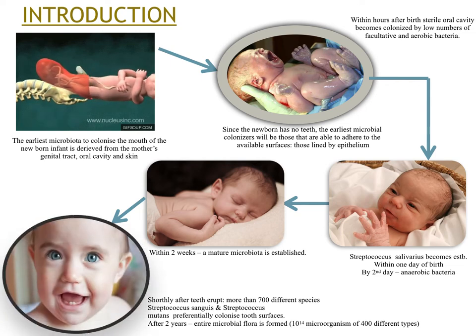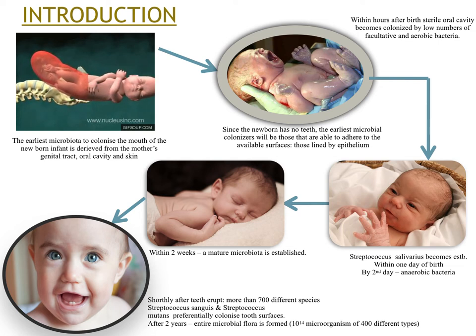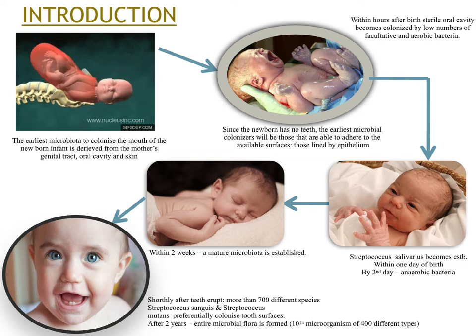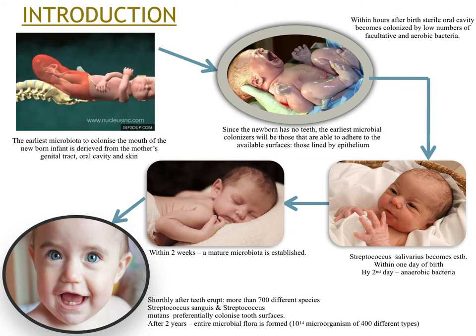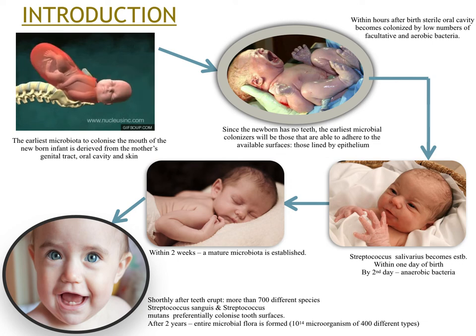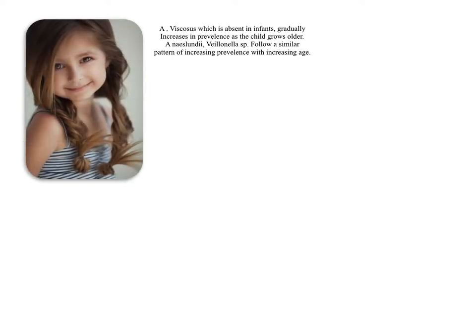Shortly after teeth eruption, more than 700 different species such as Streptococcus sanguius and Streptococcus mutans preferentially colonize tooth surfaces. After two years, an entire microflora is perfectly established with greater than 10 to the power of 14 microorganisms of various types. A. viscosus, which is absent in infants, gradually increases in prevalence as the child grows older.